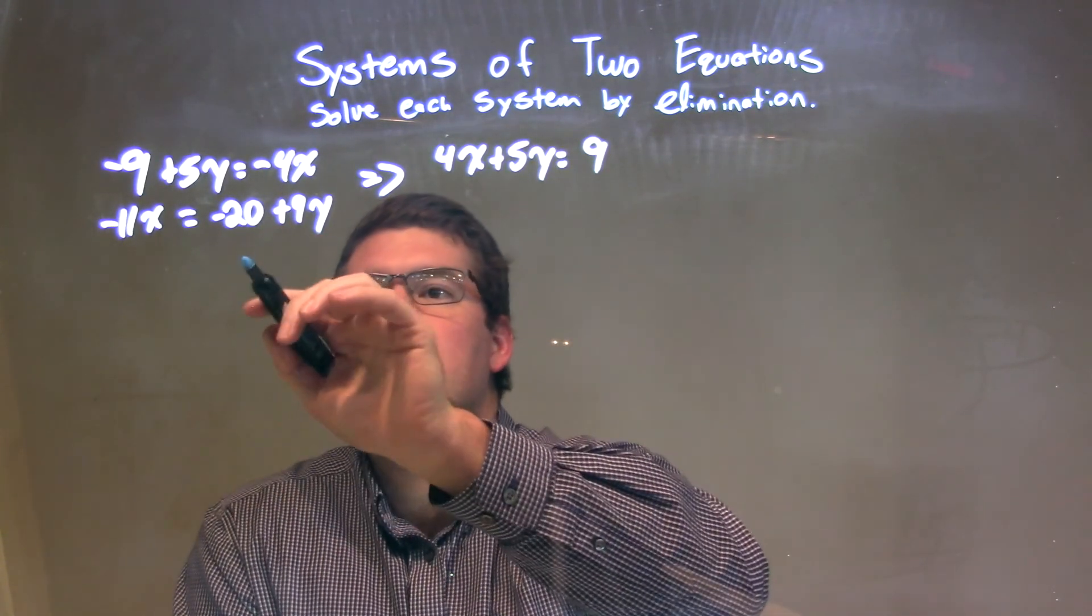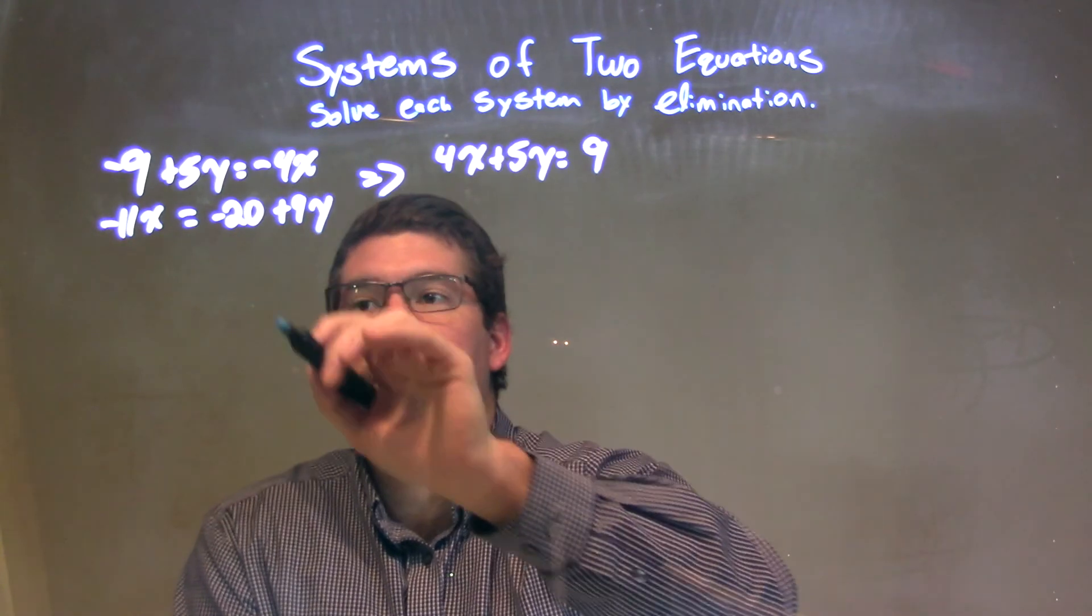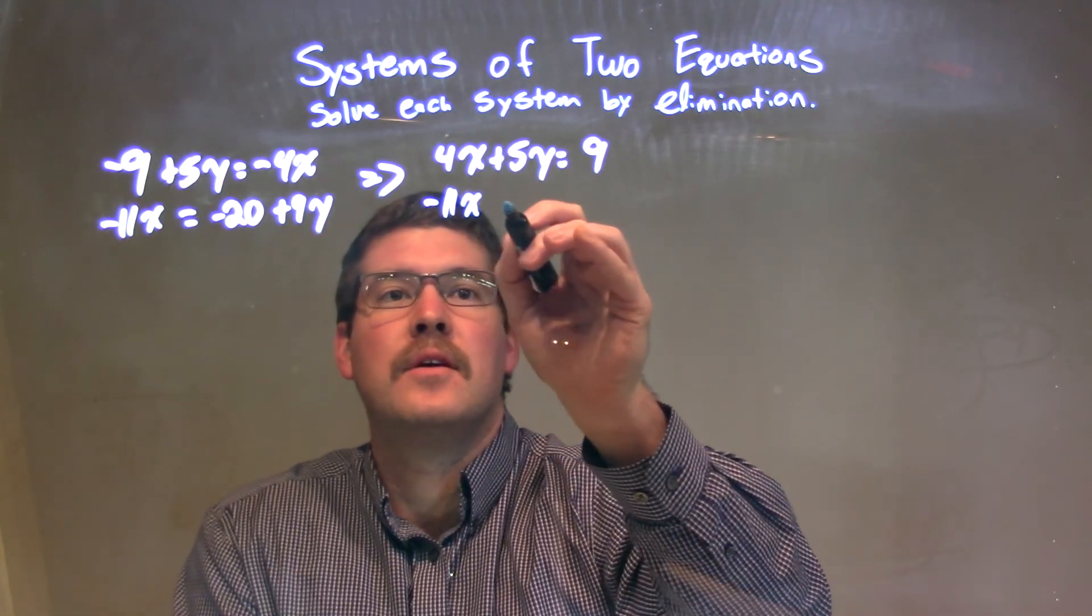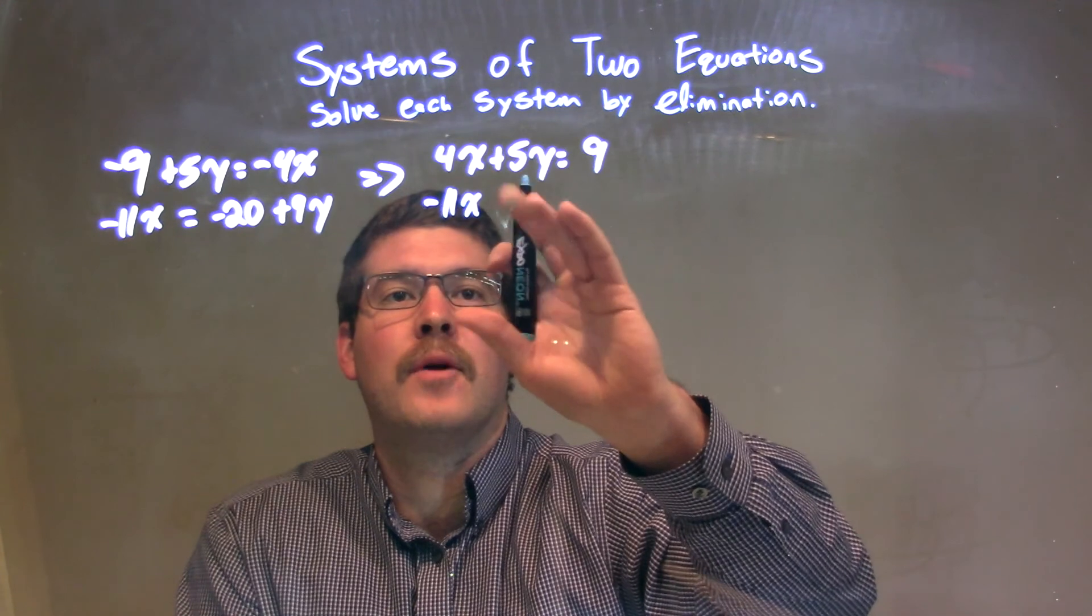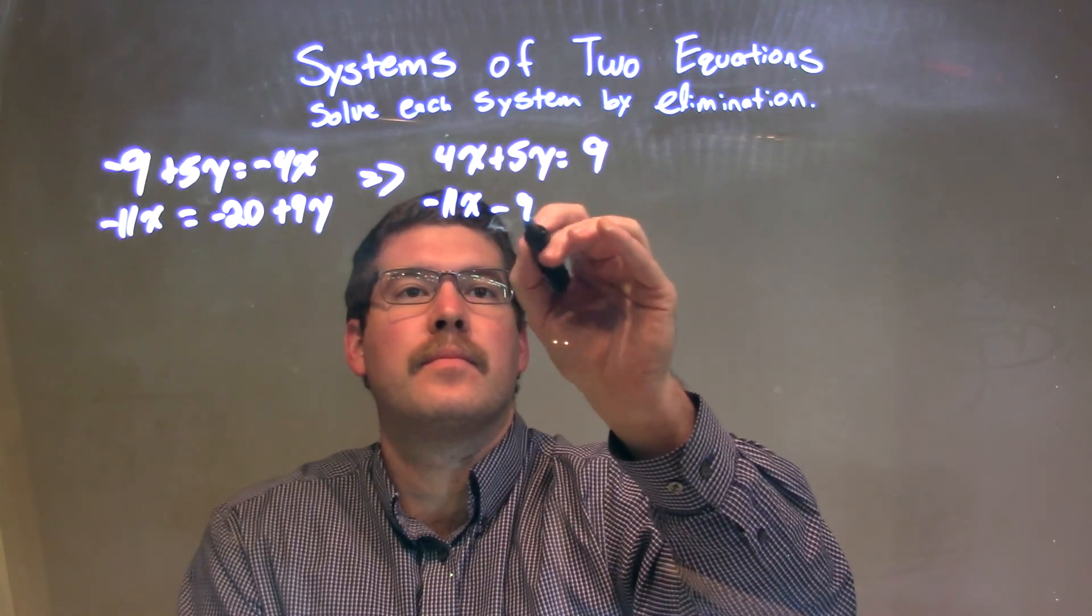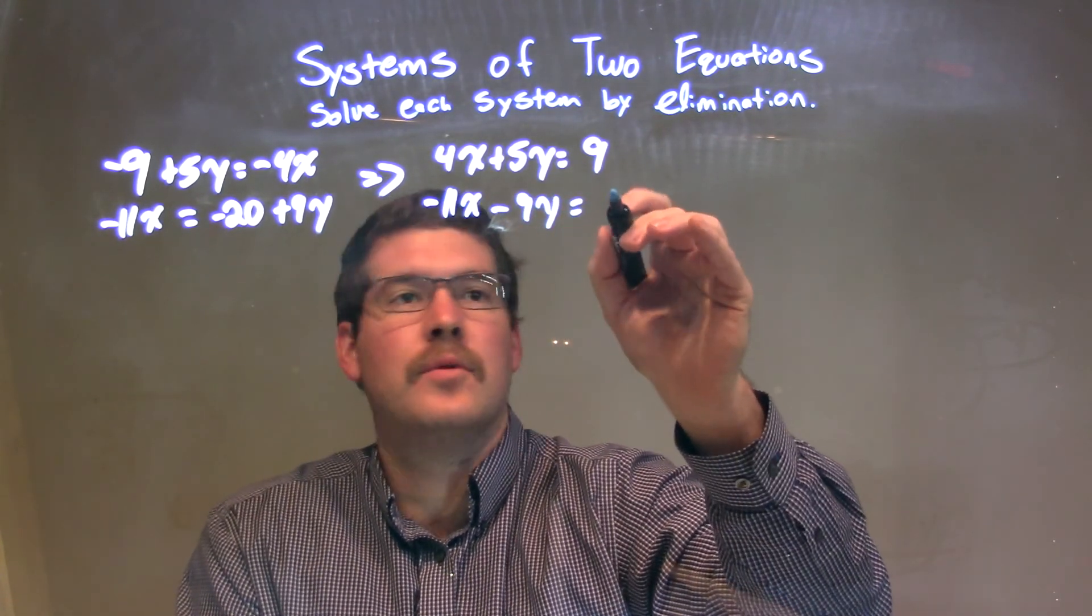Then, in the second equation, do the same thing. I'm going to subtract the 9y from both sides, so we have negative 11x minus 9y, and that's going to be equal to negative 20.